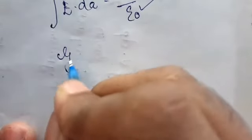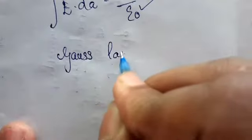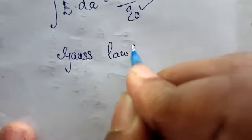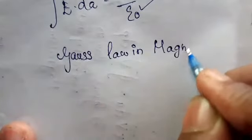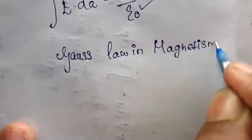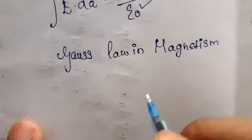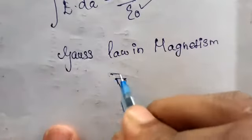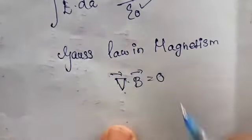Next one is Gauss's law in magnetism. The divergence operator dot B vector is equal to zero.